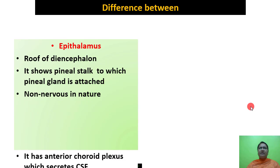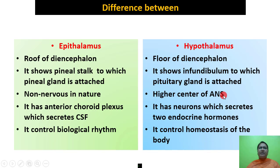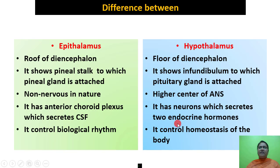Differences between epithalamus and hypothalamus: Epithalamus is the roof of the diencephalon; hypothalamus is the floor. Epithalamus shows pineal stalk to which the pineal gland is attached; hypothalamus shows infundibulum to which the pituitary gland is attached. Epithalamus is non-nervous in nature; hypothalamus is the higher center of the ANS. Epithalamus has anterior choroid plexus which secretes cerebrospinal fluid; hypothalamus secretes hormones as an endocrine gland, controls biological rhythm and maintains homeostasis of the body.